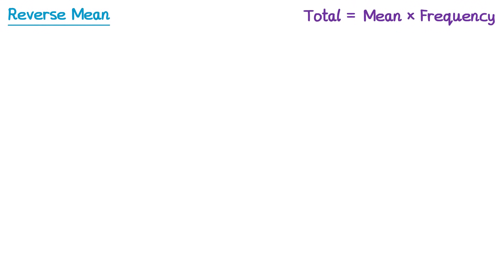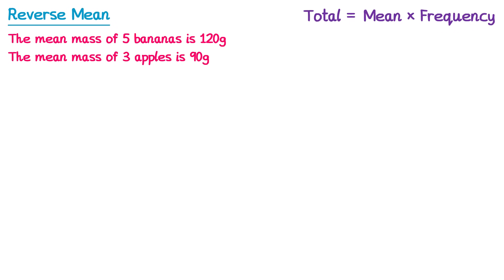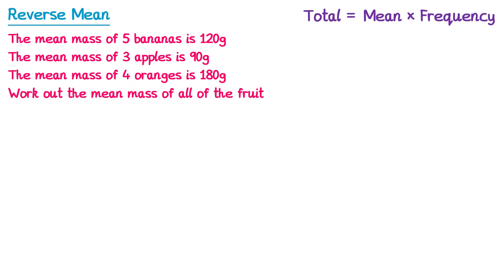Sometimes an exam question will give us several different means to deal with. For example: the mean mass of 5 bananas is 120 grams, the mean mass of 3 apples is 90 grams, and the mean mass of 4 oranges is 180 grams. We're asked to work out the mean mass of all of the fruit. A really common wrong answer is to add up 120, 90, and 180 to get 390, then divide by 3 to get 130 — unfortunately, this is completely wrong. If a question gives you a mean, you need to do the reverse mean by multiplying it by the frequency to get a total.